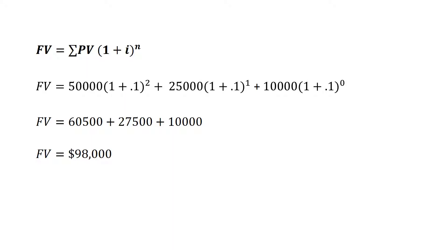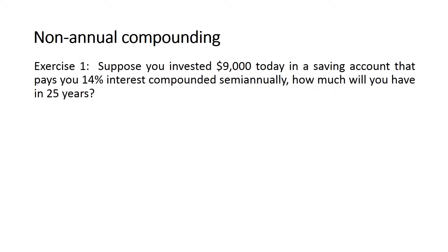We can either find the answer all together or find each one separately and then get the summation, and the answer will be 98,000 — which is the future value. Now the second part of this video is about non-annual compounding. We are referring to the interest rate: if the interest rate is compounded more than one time a year, we say this is a case of non-annual compounding.